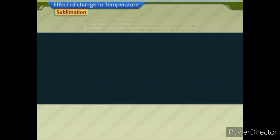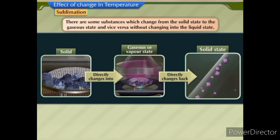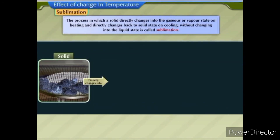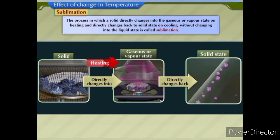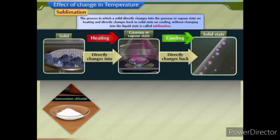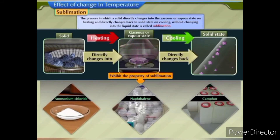Sublimation. There are some substances which change from the solid state to the gaseous state and vice versa without changing into the liquid state. The process in which a solid directly changes into the gaseous or vapour state on heating, and directly changes back to solid state on cooling without changing into the liquid state, is called sublimation. Substances like ammonium chloride, naphthalene and camphor exhibit the property of sublimation.